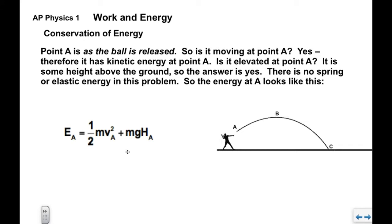If it's elevated at point A then it has gravitational potential energy. It's above the ground some height here, height of the person's arm as they release the ball. So this is an mgh_a term. There's no spring or elastic energy. So this represents my energy at A. I have kinetic and gravitational potential at point A.